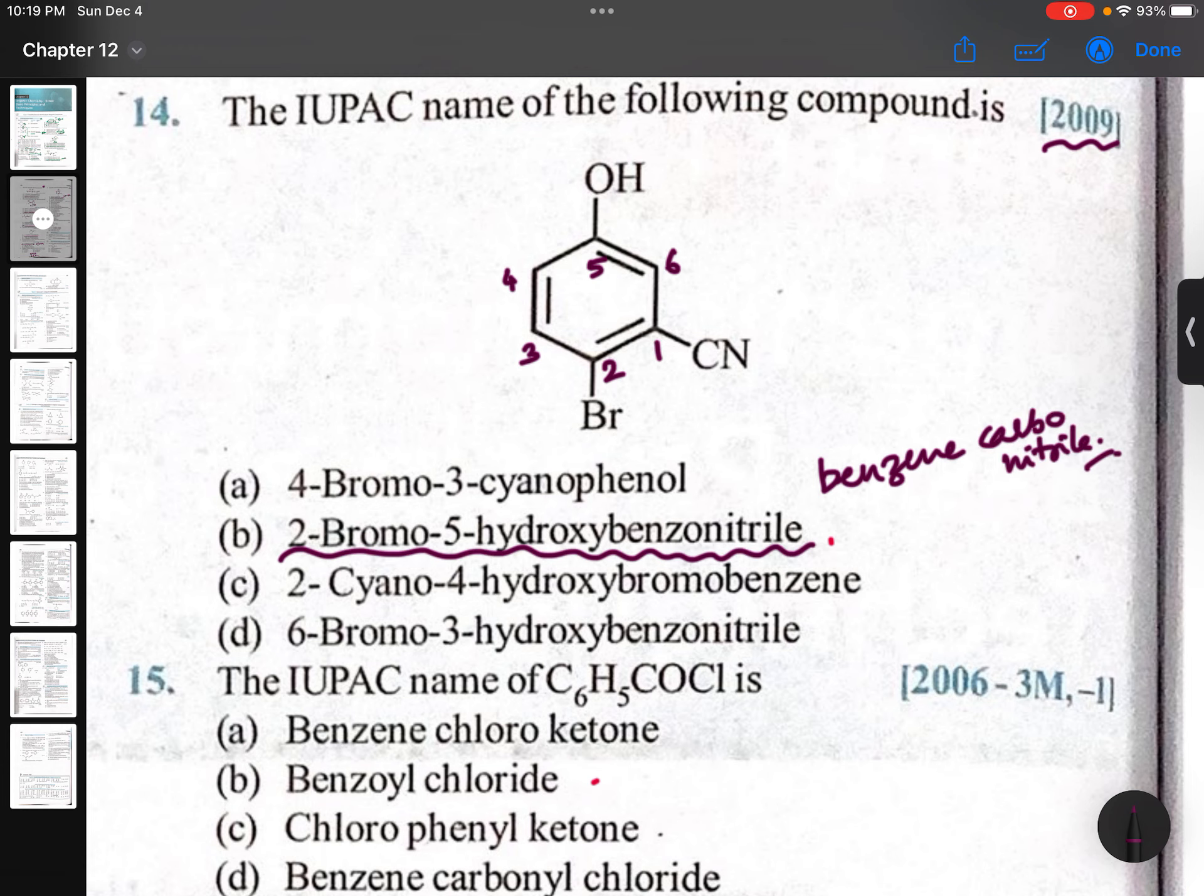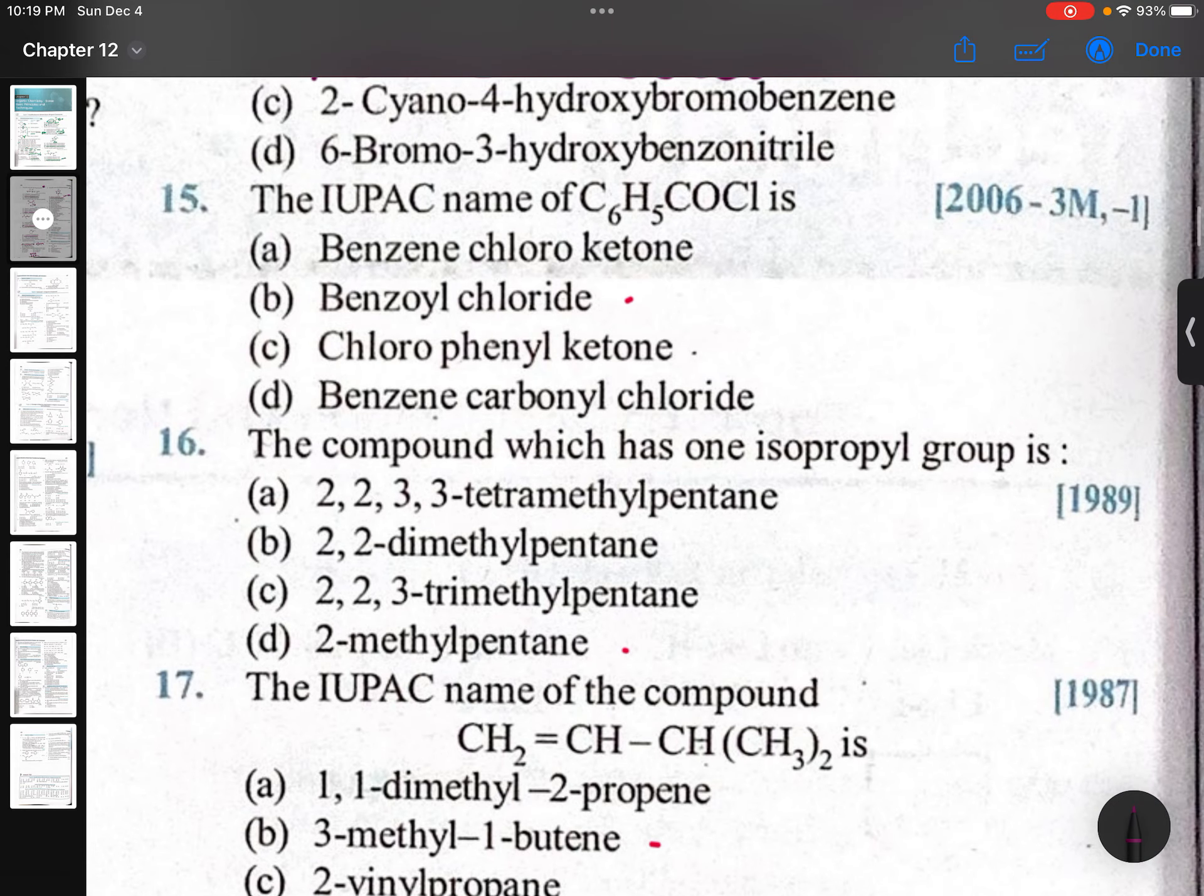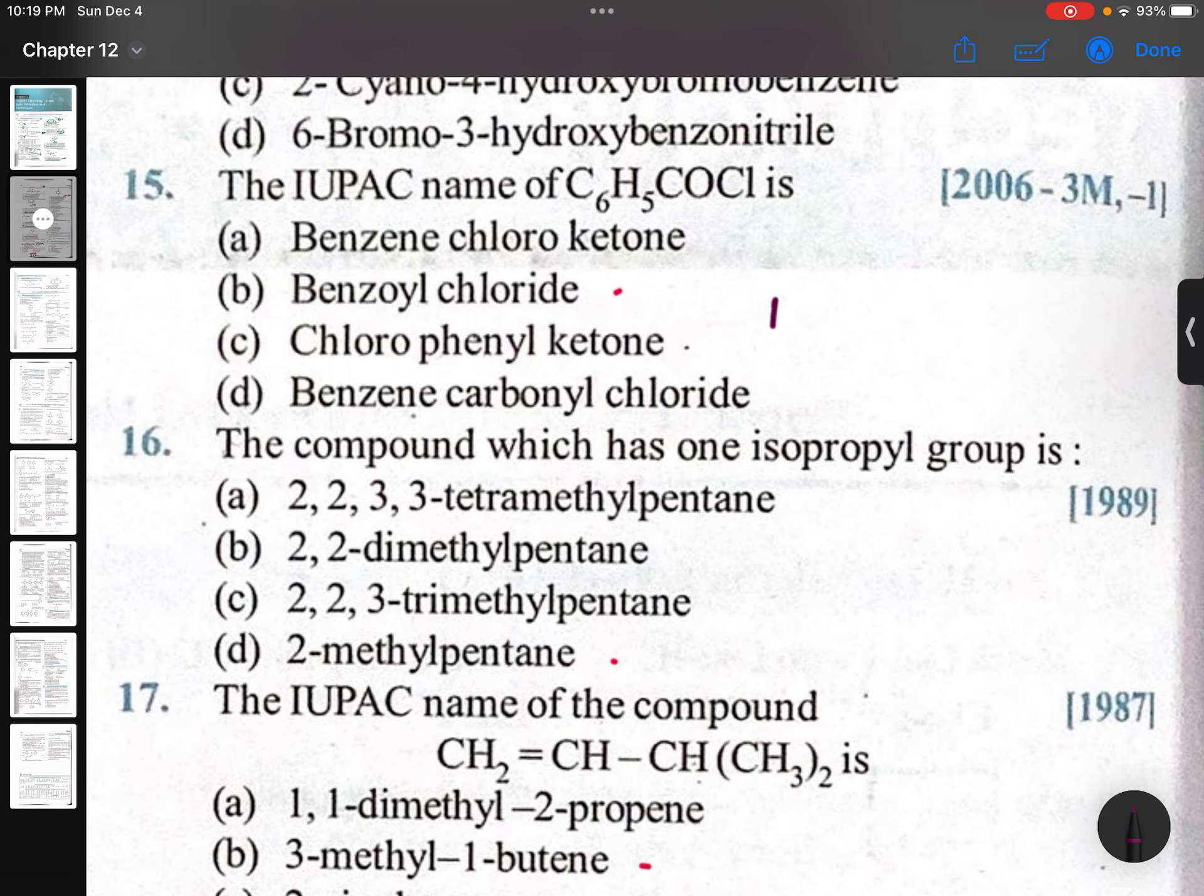The IUPAC name of C6H5COCl. This is C6H5COCl, so benzoyl chloride is the IUPAC accepted name. Otherwise, you can say benzene carbonyl chloride. This is also IUPAC accepted name - both are IUPAC accepted names: benzene carbonyl chloride or benzoyl chloride.